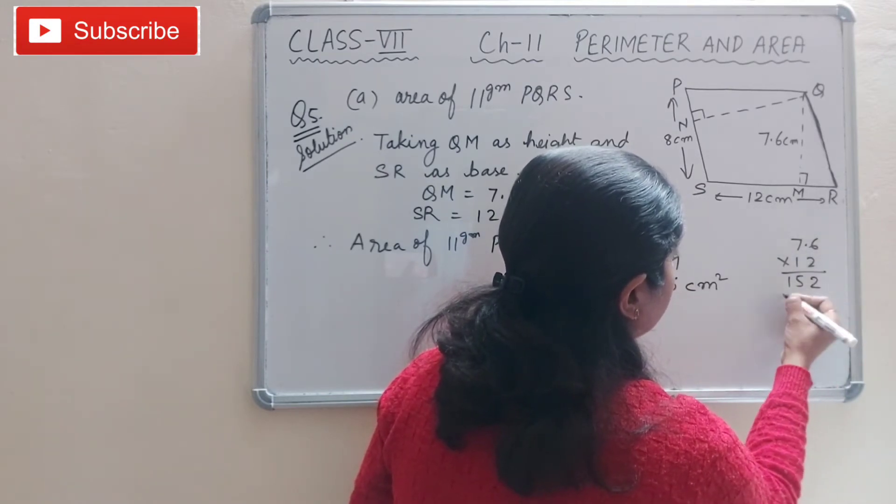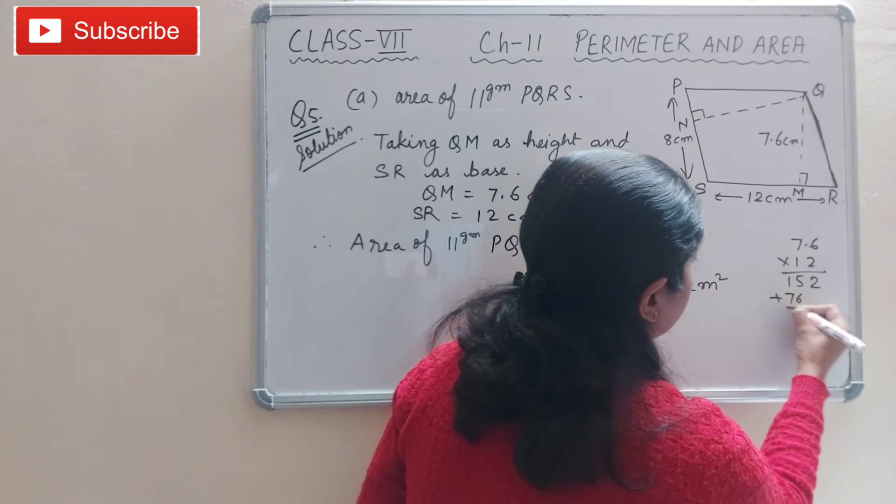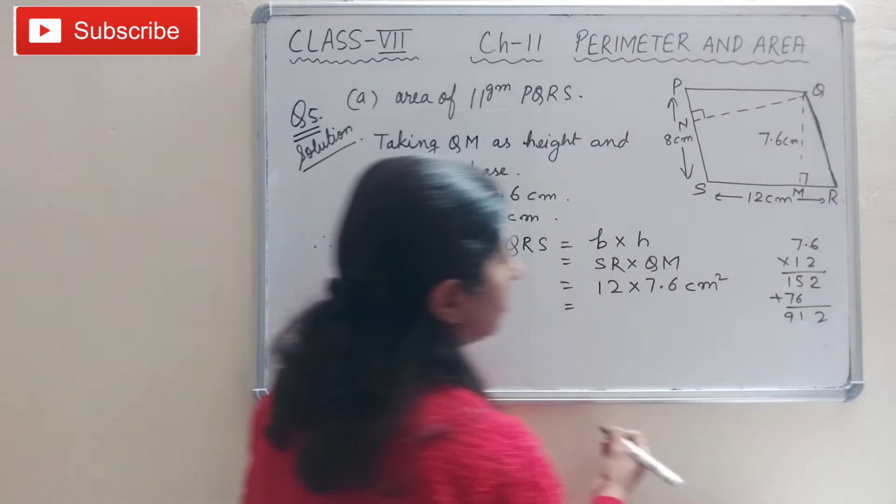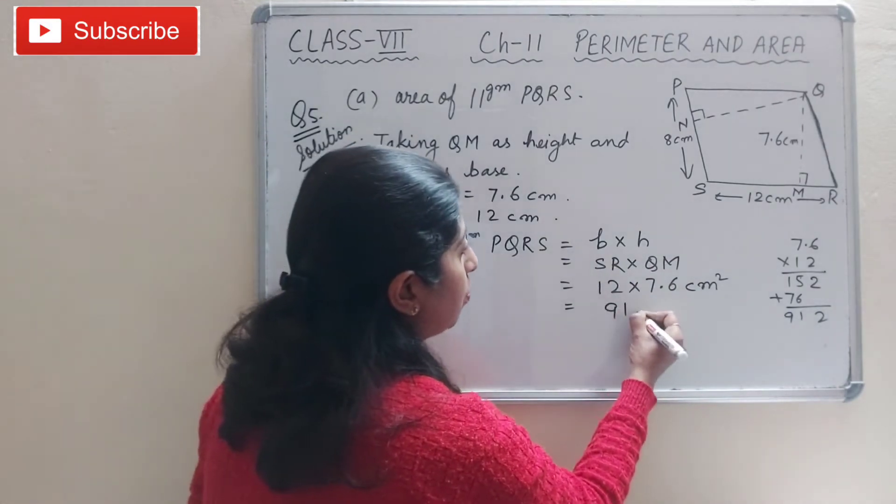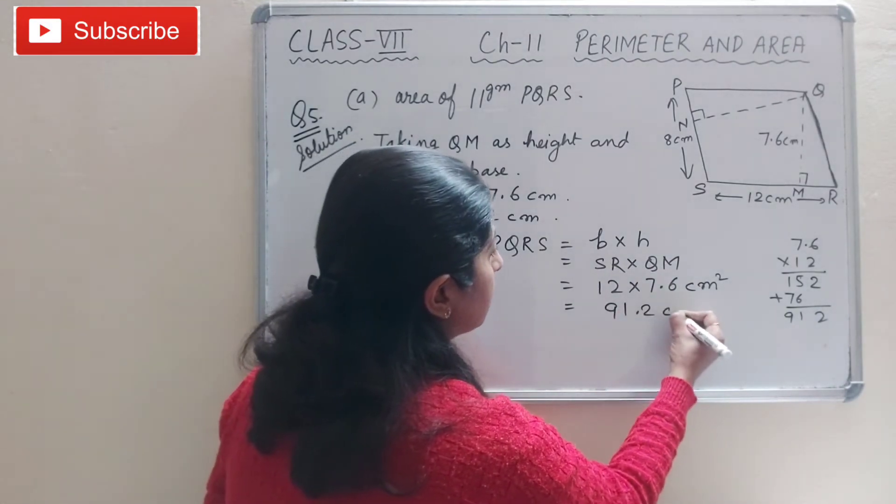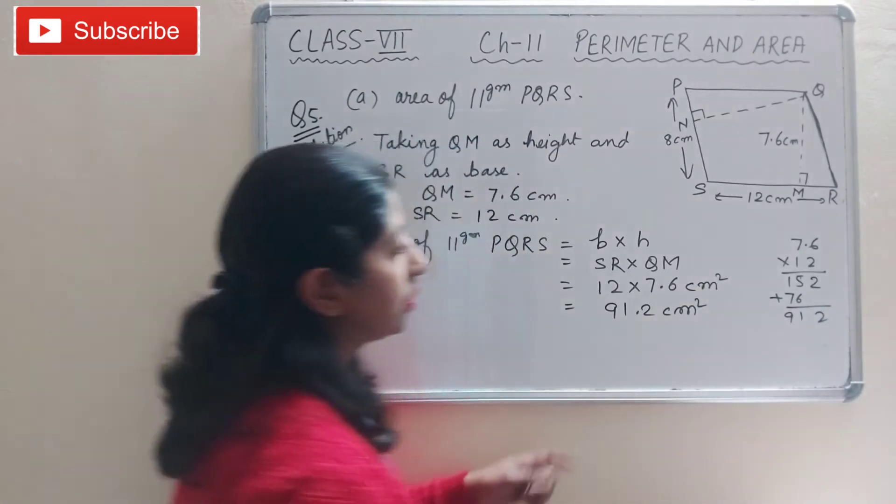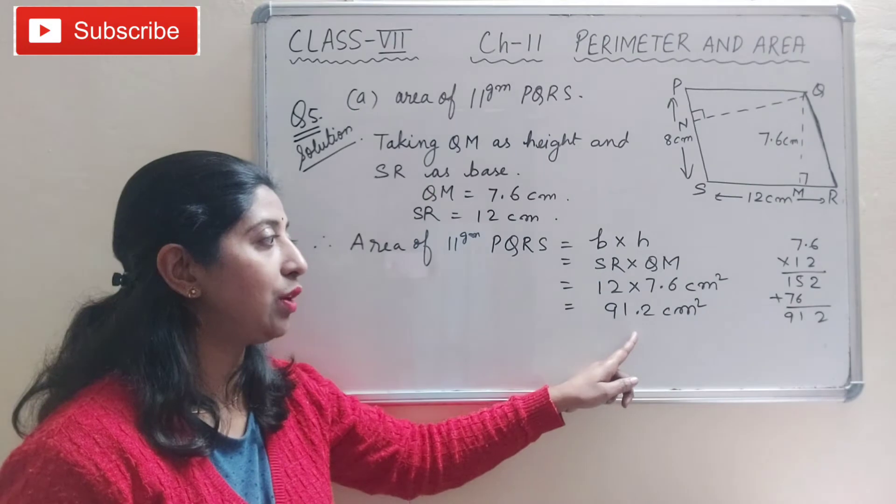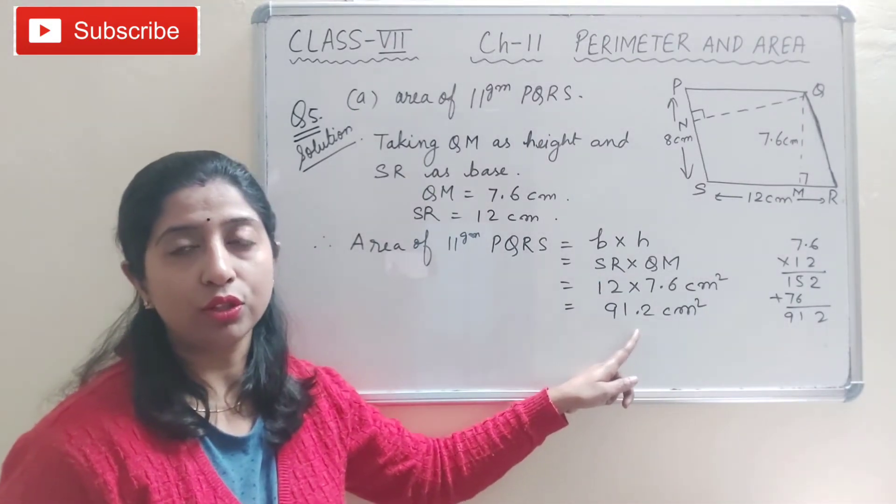Seven and two - it is 9. It is 91.2 cm square. So the area of this parallelogram PQRS is 91.2 cm square.